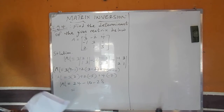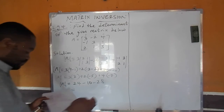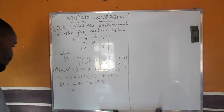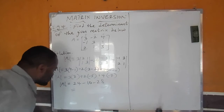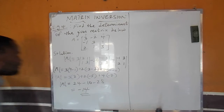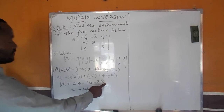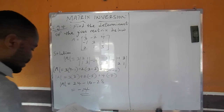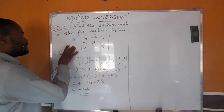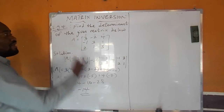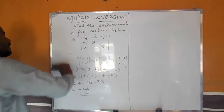Working through: 3 times (9 minus 1) = 3 times 8 = 24. Then minus 2 times (negative 3 minus 2) = minus 2 times negative 5 = plus 10. But wait, that gives 24 minus 10 = 14, then plus 4 times (negative 1 minus 6) = 4 times negative 7 = minus 28. So the determinant of A equals 14 minus 28, giving us negative 14 as our final answer.